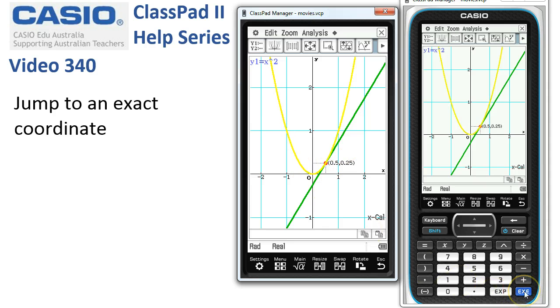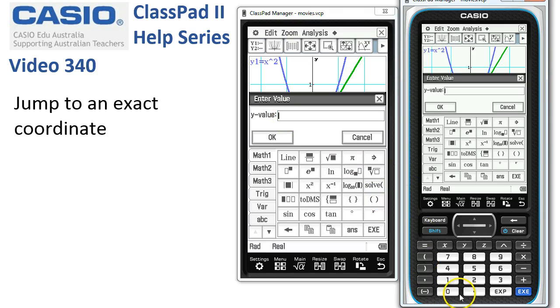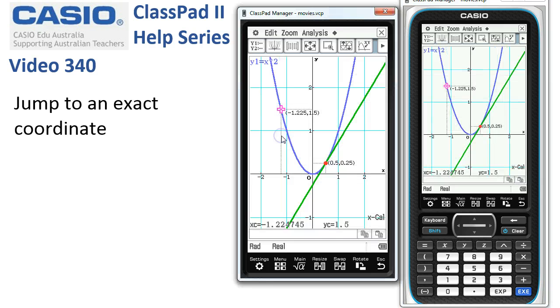So I choose it with execute, and now we say when the y coordinate is 1.5, tap OK, and it's taken us to where the y coordinate is 1.5, and here's the x coordinate at that point.